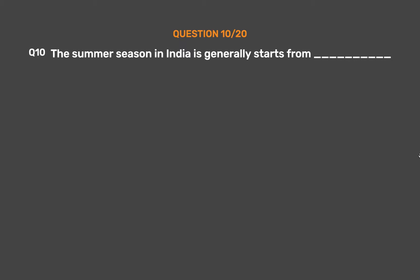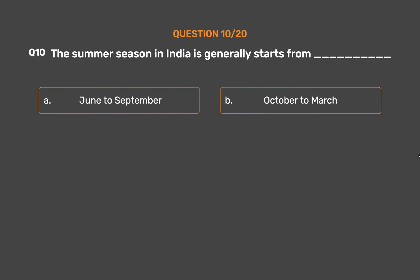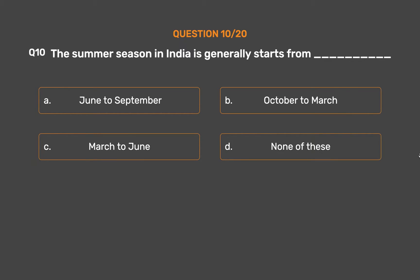Question No. 10: The summer season in India generally starts from ___. Option A: June to September. Option B: October to March. Option C: March to June. Option D: None of these.